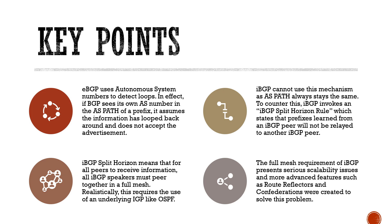That might be hard to conceptualize in your head, but when I draw it out I think it will make a lot more sense. With iBGP, it obviously can't use this mechanism because eBGP tracks the path of all the different ASes through which a prefix transits by using different AS numbers.